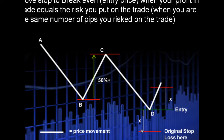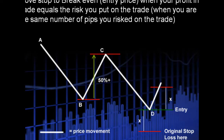We've got our stop loss here, and whatever distance that is, we will mark that as X. So when we are in profit X amount of pips, we will move our stop from the original place up to the entry point, so it is now at the break even point. And if price now goes down, we are going to enter and exit at the exact same place. We would leave the trade at that entry price, meaning we're breaking even — we're not losing any money on the trade.